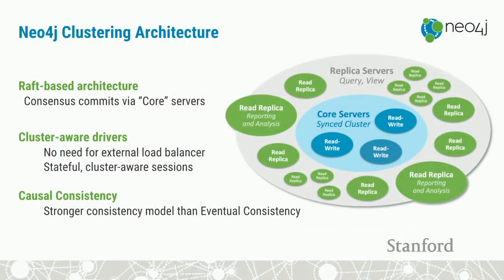This allows us to scale to very large datasets. Another characteristic worth mentioning briefly is the clustering architecture for Neo4j. We can have multiple instances of Neo4j in a cluster deployment to scale out throughput and availability. We have core servers responsible for handling commits using the Raft protocol for consensus, and we can scale out reads with additional read replicas.